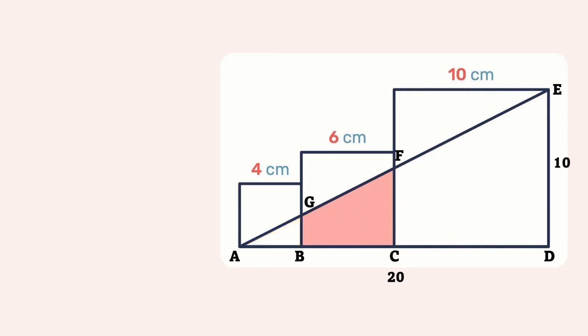In particular, ED compared to AD will equal FC compared to AC. We know ED is 10 and AD is 20. We also know that AC is 4 plus 6, which is 10. So FC will be 10 times 10 divided by 20, which gives us 5 centimeters.